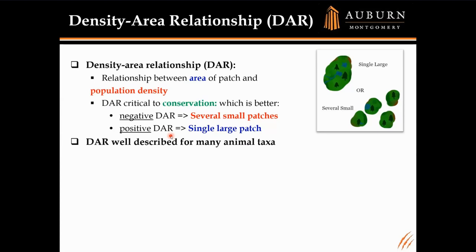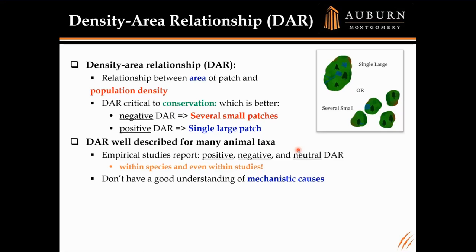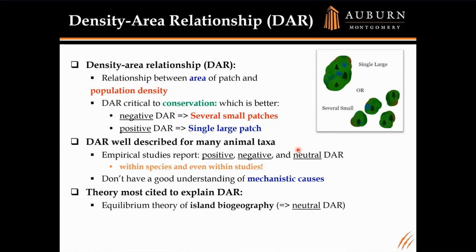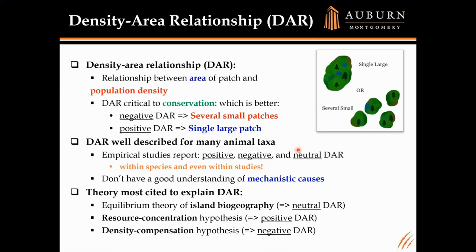DAR has been well described for many animal taxa. Interestingly, empirical studies report positive, negative, as well as neutral DAR within species and even within the same studies. We don't really have a good understanding of the mechanistic causes behind these differences. The theory most often used includes the equilibrium theory of island biogeography (neutral DAR), resource concentration hypothesis (positive DAR), or density compensation hypothesis (negative DAR). But there's no good understanding of why we'd have intermediate levels of DAR.